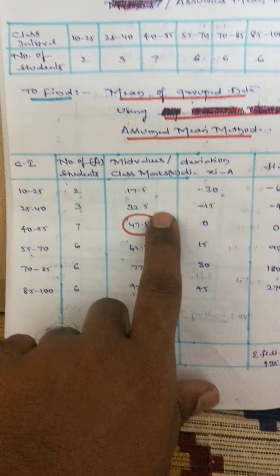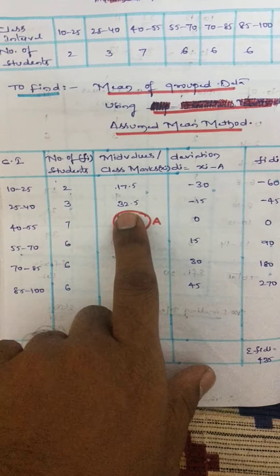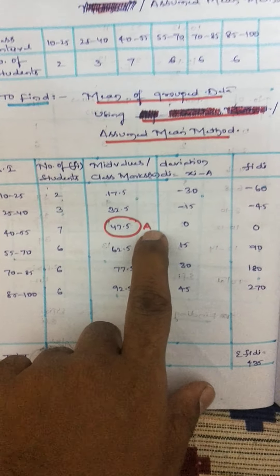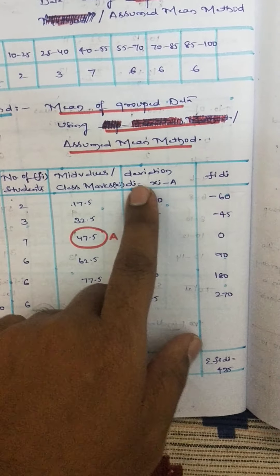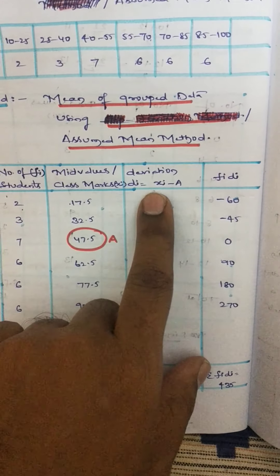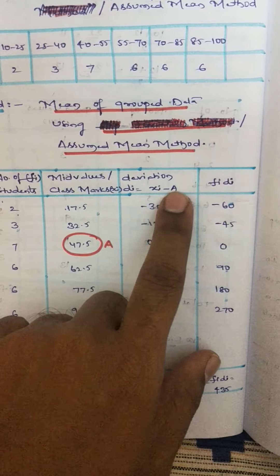Then mark that value as A and go to the fourth column, the calculation part, the deviation part. What is the deviation formula here? Di equals xi minus A.